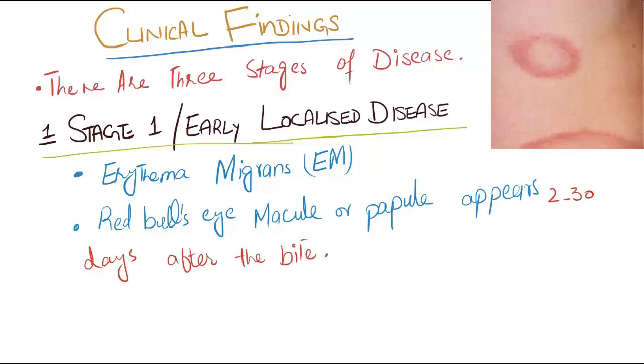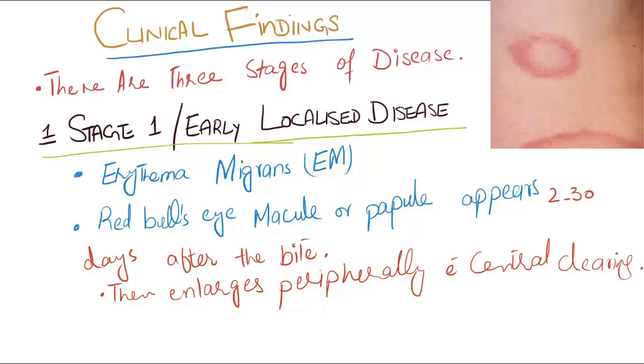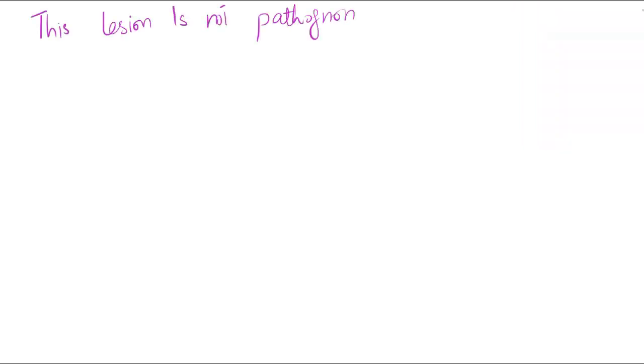It is the characteristic feature. Initially, a red bull's-eye macule or papule appears two to thirty days after the bite, then enlarges peripherally with central clearing. It may persist for months. Erythema migrans is not pathognomonic of Lyme disease.